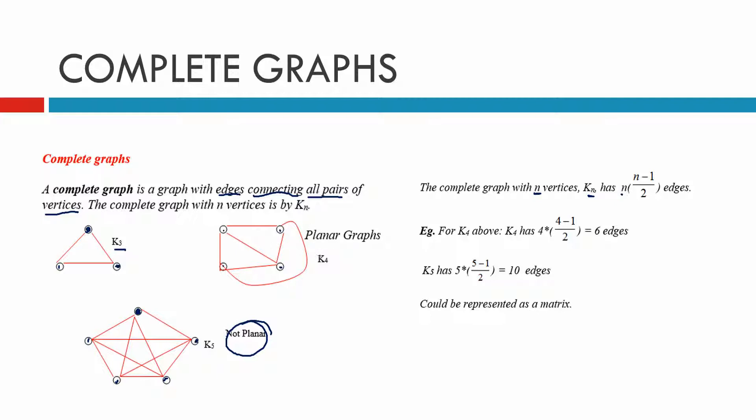So for the example, for k of 4, this one here, k of 4, there were 4 vertices. So we've got 4 times 4 minus 1 divided by 2, and when we work that out, we have 6 edges. And you can see that there are 6 edges there. 1, 2, 3, 4, 5, 6.